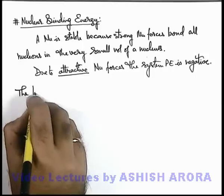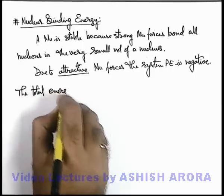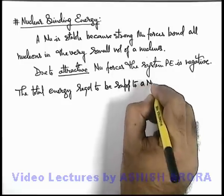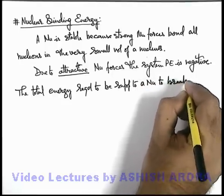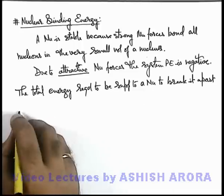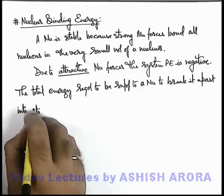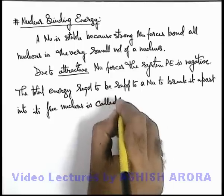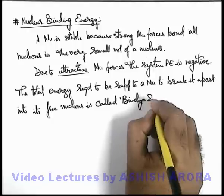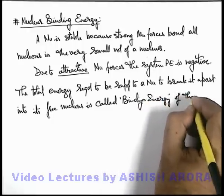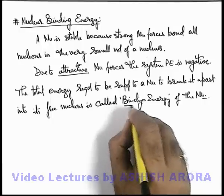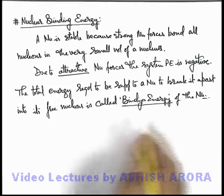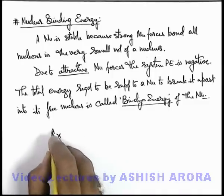So here we can write the total energy required to be supplied to a nucleus to break it apart into its free nucleons is called the binding energy of the nucleus. This is termed as binding energy because this is the energy because of which the whole system is in bounded form.